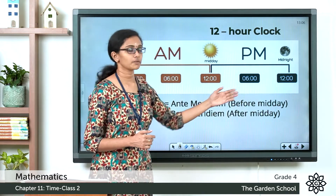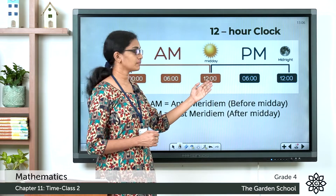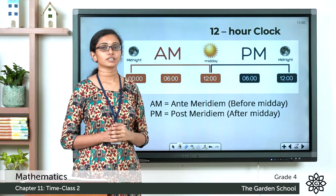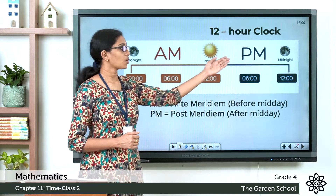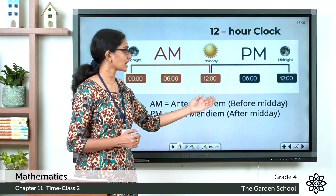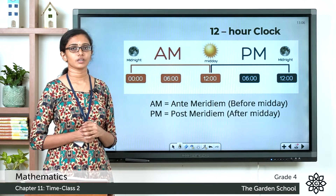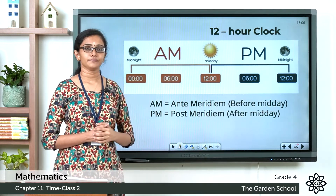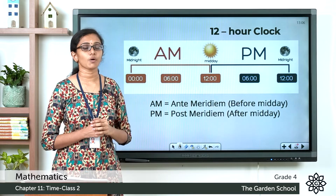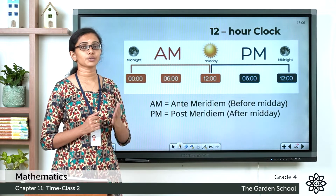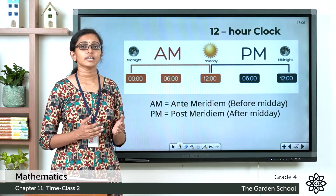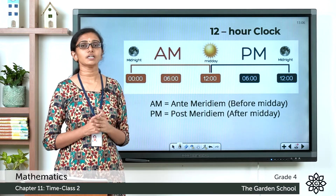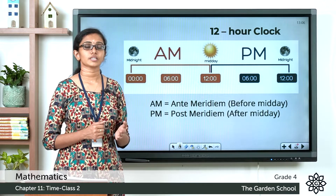AM means before midday. From 12 in the midday to 12 in the midnight, that is called post-meridiem or PM, and it means after midday. So from 12 in the midnight to 12 in the noon we say it is AM, and from 12 in the noon to 12 in the midnight we say it is PM.